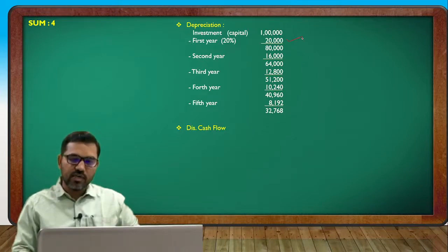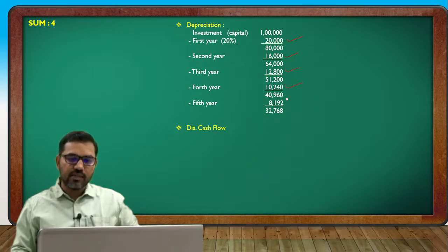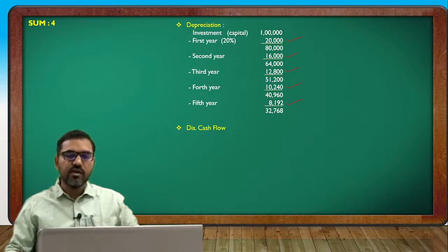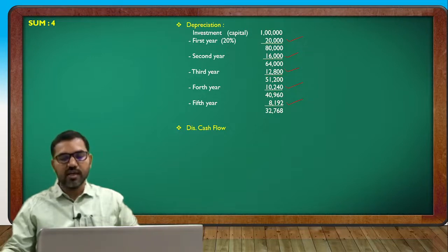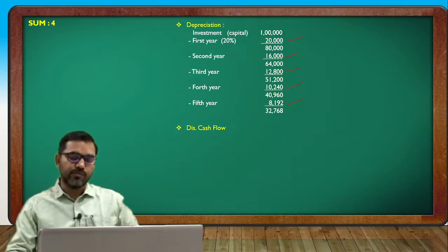The WDV depreciation figures are: first year 20,000; second year 16,000; third year 12,800; fourth year 10,240; and fifth year 8,192.